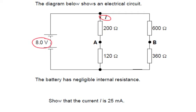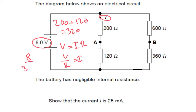So we've got 8 volts. Now these two resistors are in series. So the total resistance in this part here is going to be 320. So V equals IR. V over R equals I.